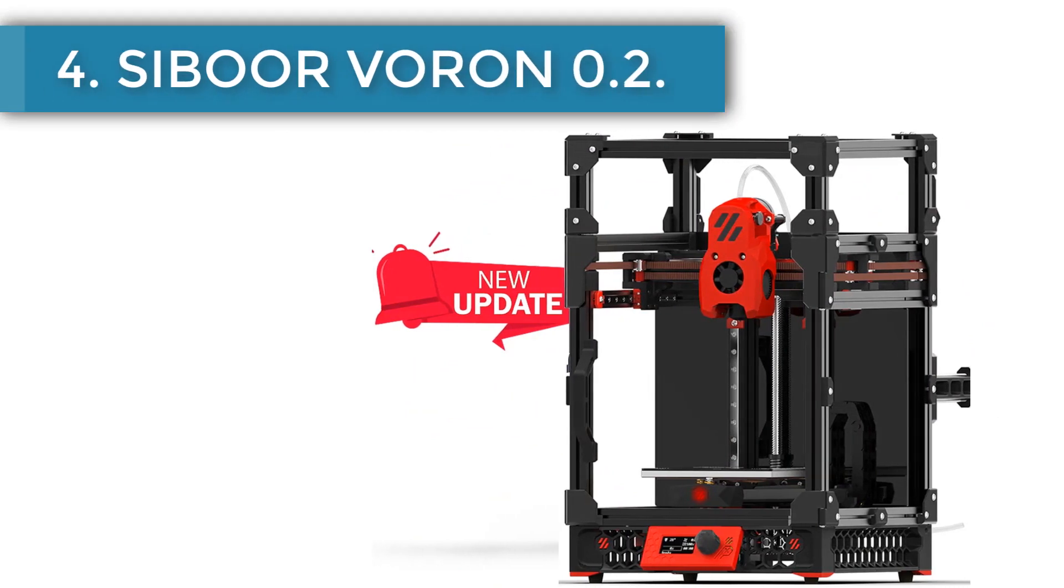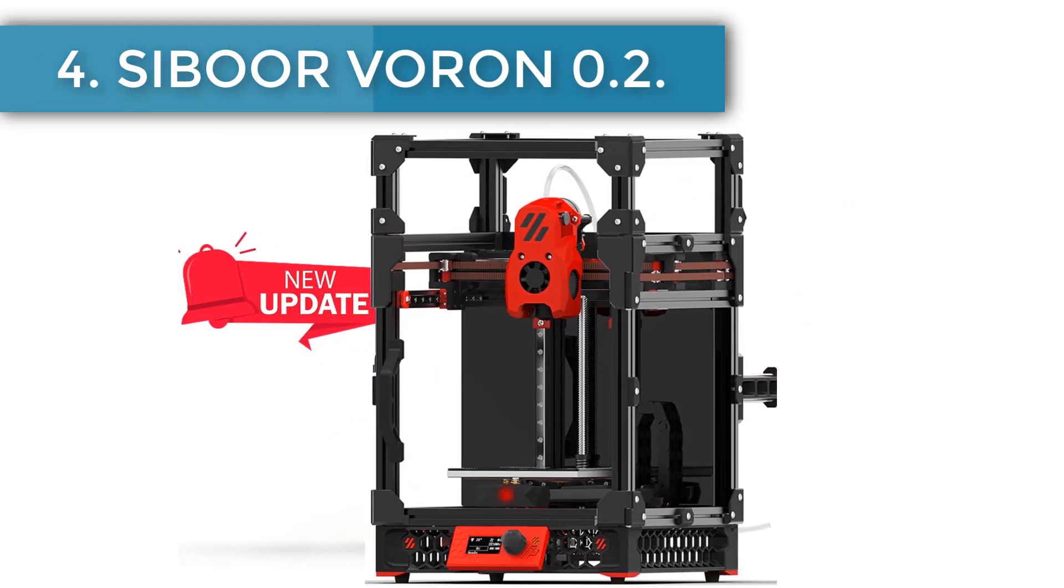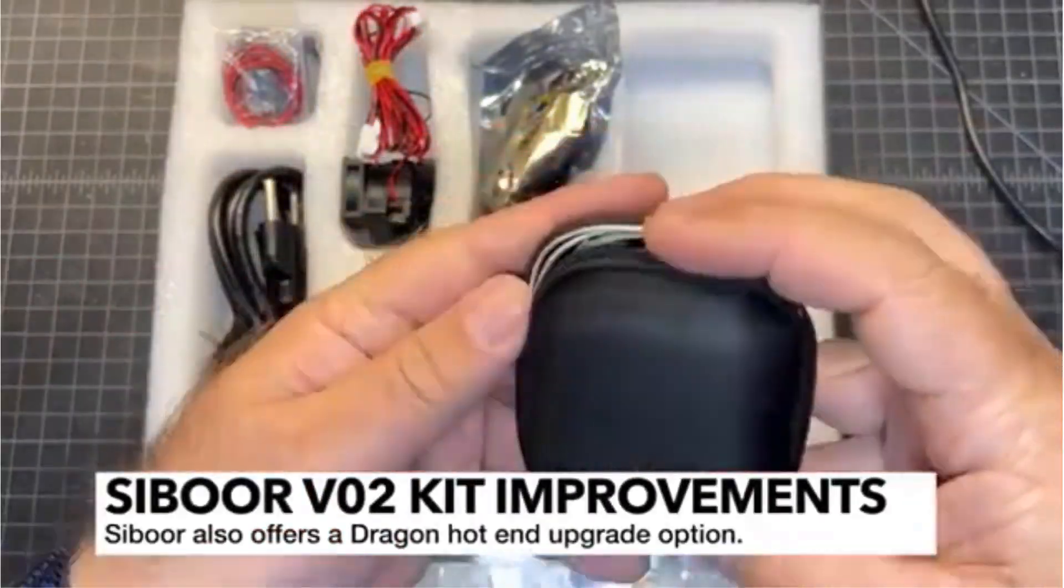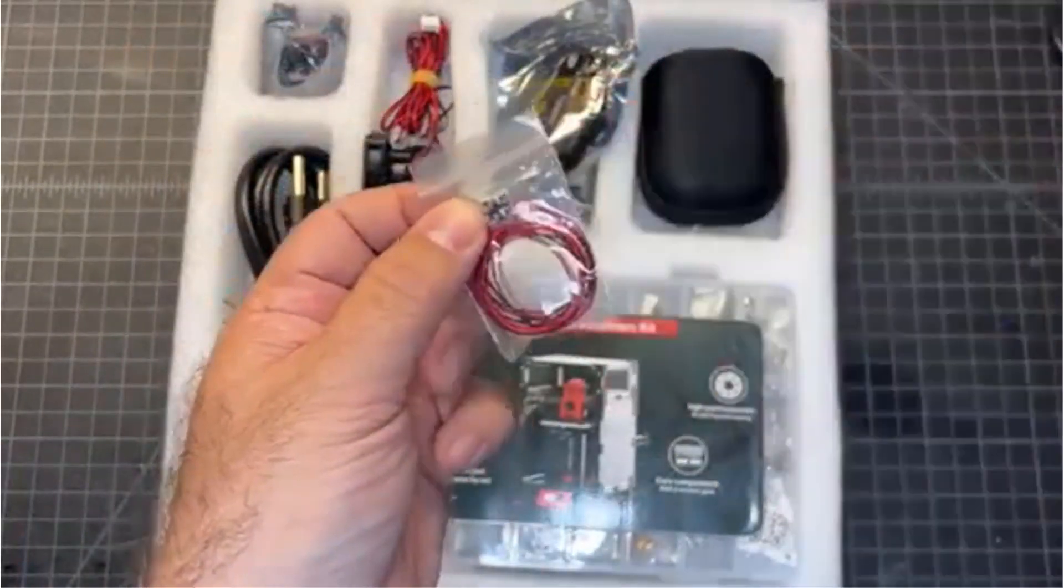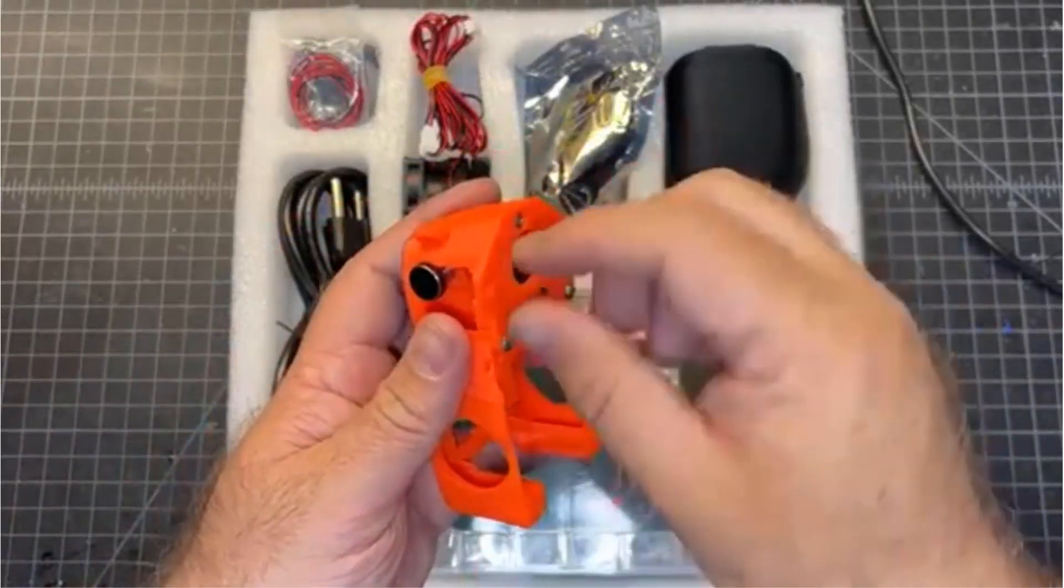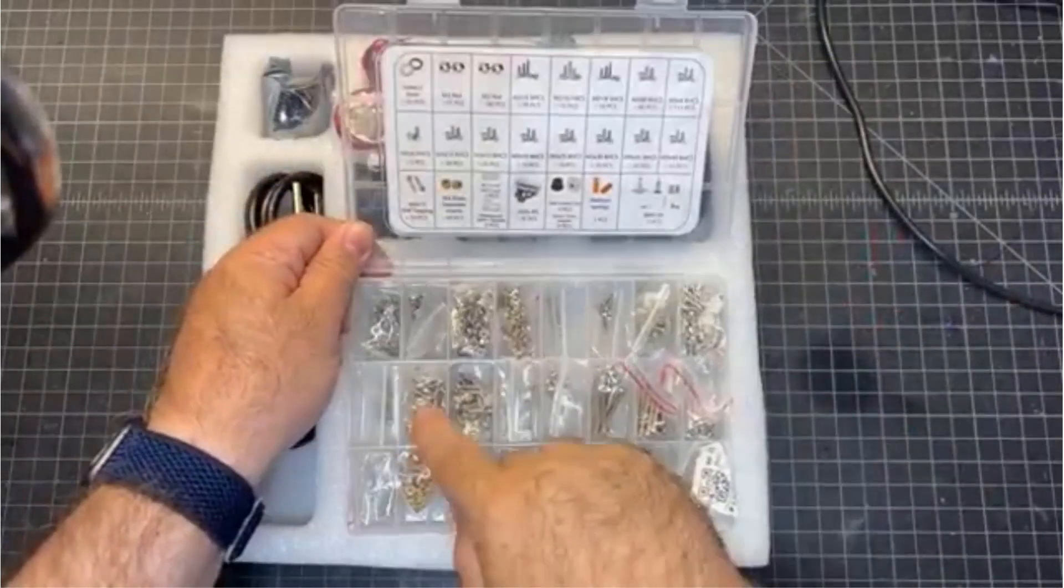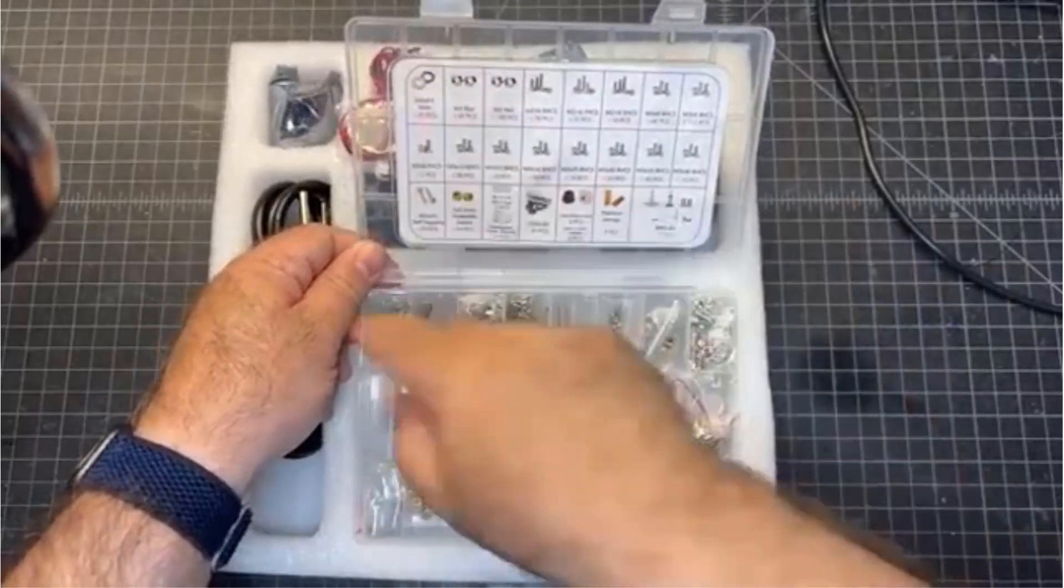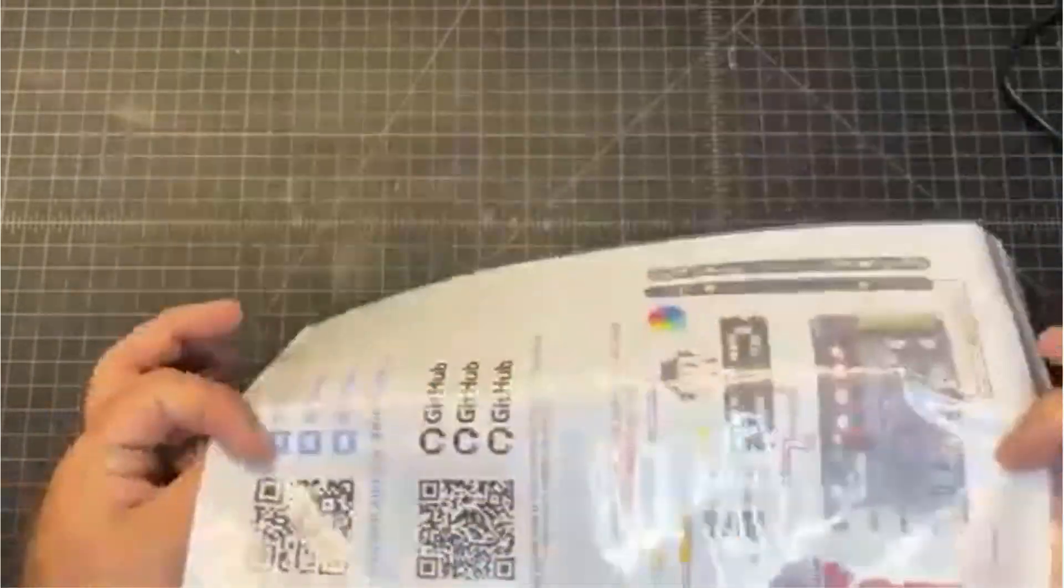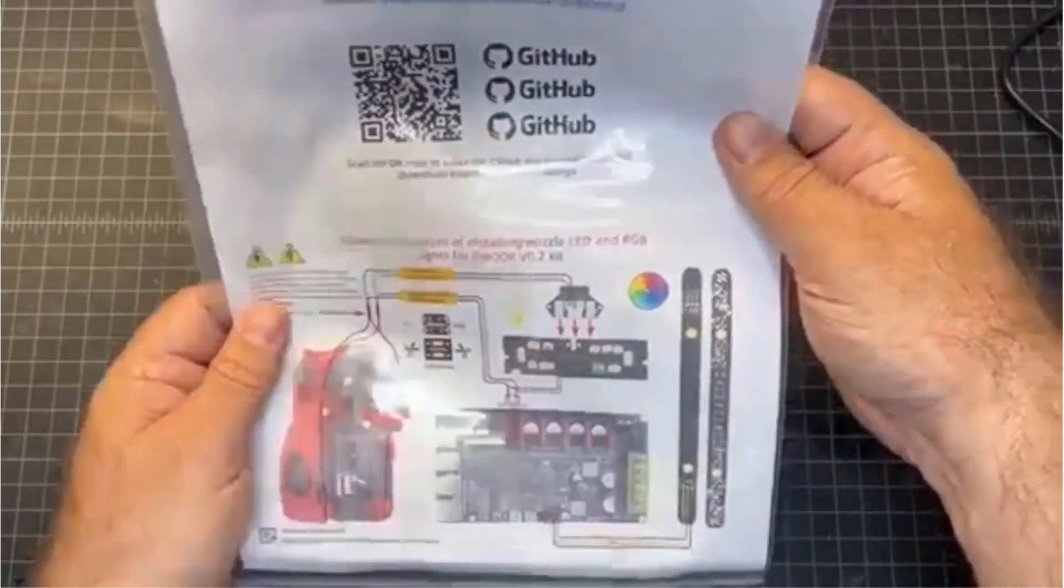Number four, Zabor Voron 0.2. Founded in the technological city of Shenzhen, China, Zabor specializes in small 3D printers for hobby workshops and STEM education. In addition to shipping from China, the manufacturer has warehouses in Poland and Italy, meaning that European customers can enjoy reduced delivery times.